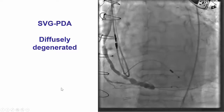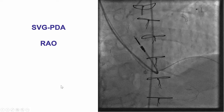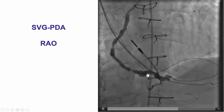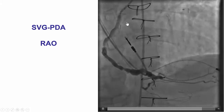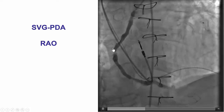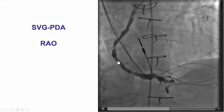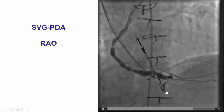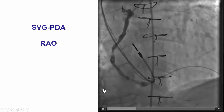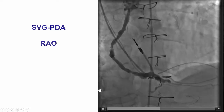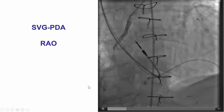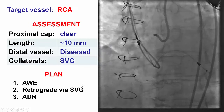Therefore, what was recommended is instead of treating the multiple vein graft lesions — which would carry significant risk for distal embolization — to instead re-canalize the native right coronary artery, which would have better short and long-term patency.